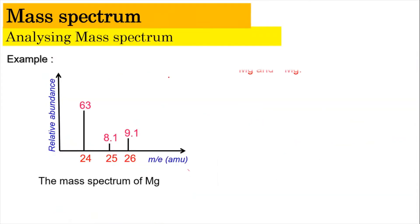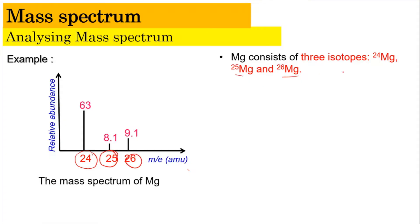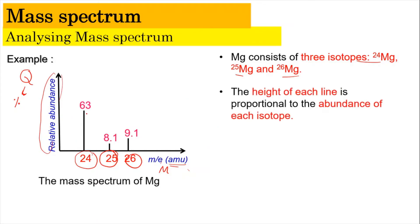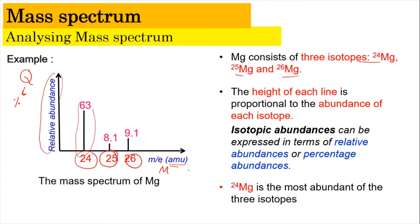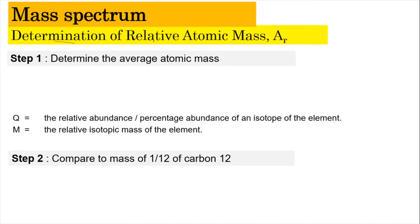Now let's look more at analyzing the mass spectrum. From the mass spectrum shown, you can see it consists of ²⁴Mg, ²⁵Mg, and ²⁶Mg — so there are three isotopes. On the y-axis, we have the relative abundance, usually denoted as Q, and on the x-axis, we have the mass-to-charge ratio, which can be in units of AMU. The relative abundance can be expressed as a percentage or as a relative abundance value. The height of each line is proportional to its abundance — so ²⁴Mg is the most abundant compared to ²⁵Mg and ²⁶Mg.